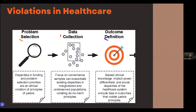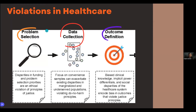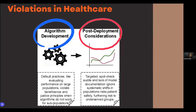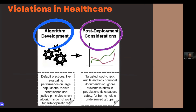We can also look at this from violations in healthcare. This infographic gives more granularity about how you can have disparities in the problem you're trying to solve, disparities in the data you collect — is it representative of the population — as well as disparities, biases, and ethical concerns within how you develop your algorithm and how you deploy it.